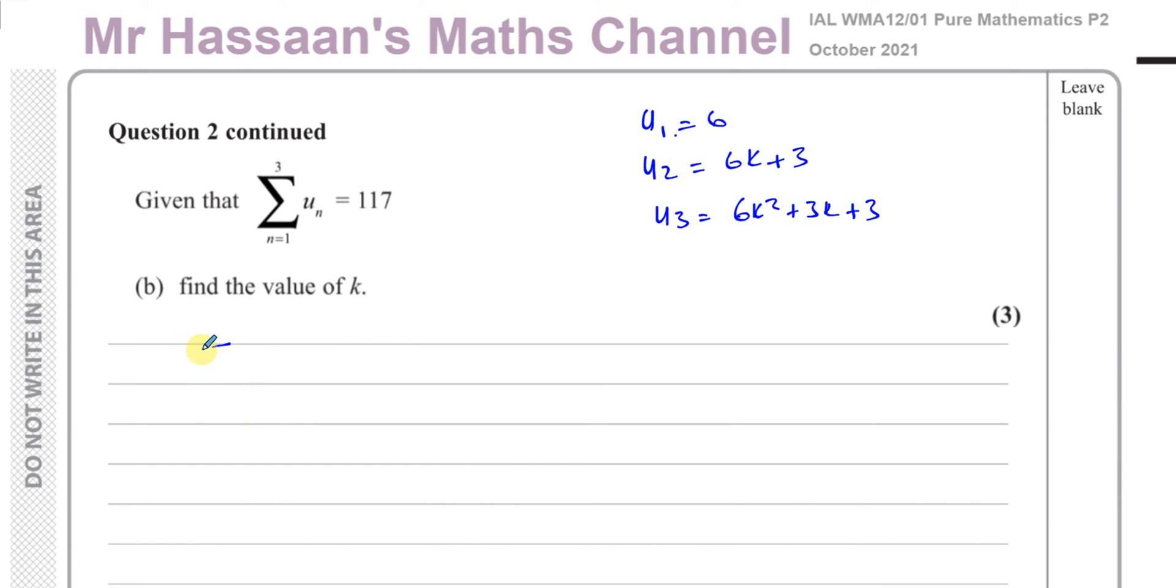This means the sum of all the terms from the first term to the third term. So sigma UN from N equals 1 to 3 means U1 plus U2 plus U3. The first term plus the second term plus the third term will give you 117.